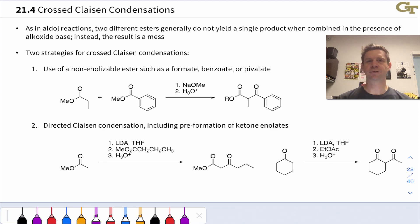Like we saw for the aldol reaction, the synthetic utility of the Claisen condensation is really expanded if we can use two different esters in the reaction or two different carbonyl compounds more generally, and we can do that in a crossed Claisen condensation. But as in the aldol reaction, we have some limitations on the structures of the substrates we can use for this.